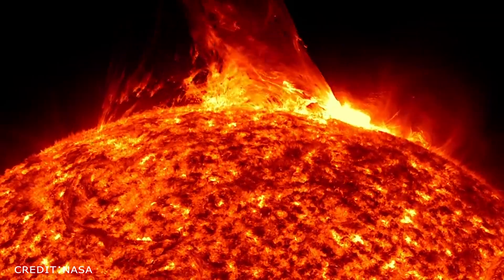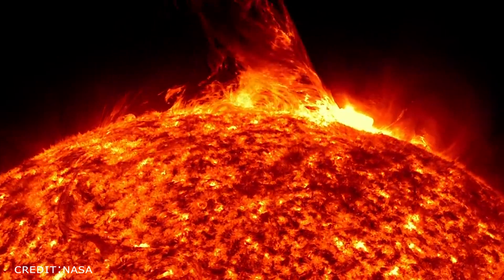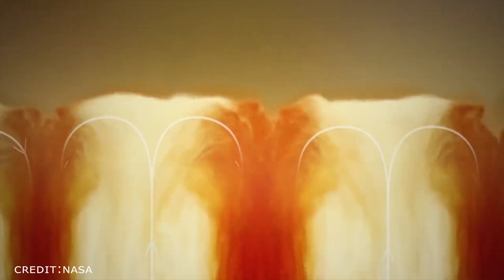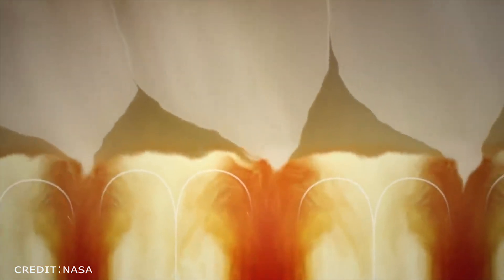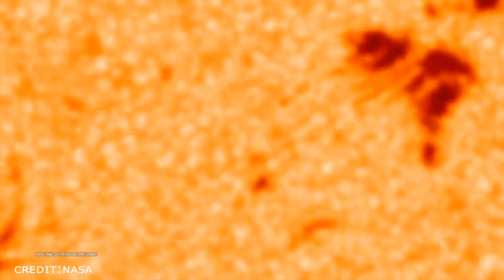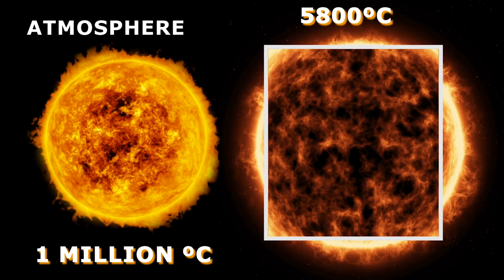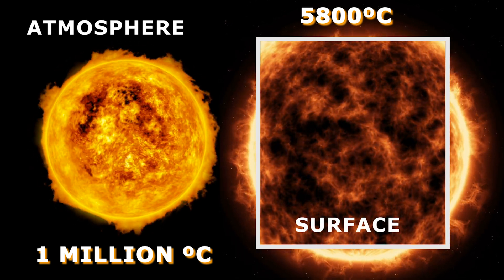If this model is followed, then the energy released from nuclear fusion should reach the maximum surface first, followed by the atmosphere. However, in the case of the sun, the temperature of the atmosphere is higher than that of the surface, which is a paradox.